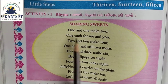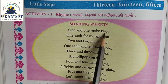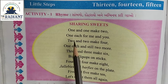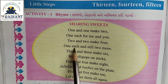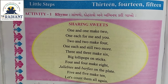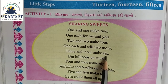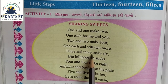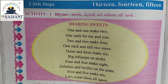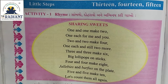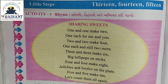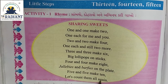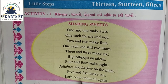One and one make two, one each for me and you. One and one make two, one each for me and you. Two and two make four, one each and still two more. Two and two make four, one each and still two more. Three and three make six, big lollipops on sticks. Three and three make six, big lollipops on sticks. Four and four make eight, jelebis and sweets on the plate. Four and four make eight, jelebis and sweets on the plate. Five and five make ten, let's count them all again. Five and five make ten, let's count them all again.